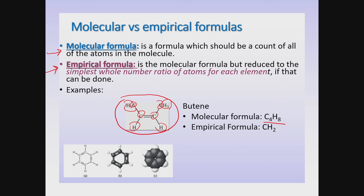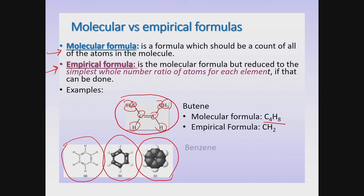This molecule is called benzene, and here are three pictures of how it can be represented: a structural formula, a ball-and-stick model, and a space-filling model. If you look carefully at the structural formula, there are six carbon atoms and six hydrogen atoms — that is the molecular formula C6H6. Reducing that to the simplest whole number ratio by dividing by six, we get one carbon and one hydrogen, so the empirical formula is CH.